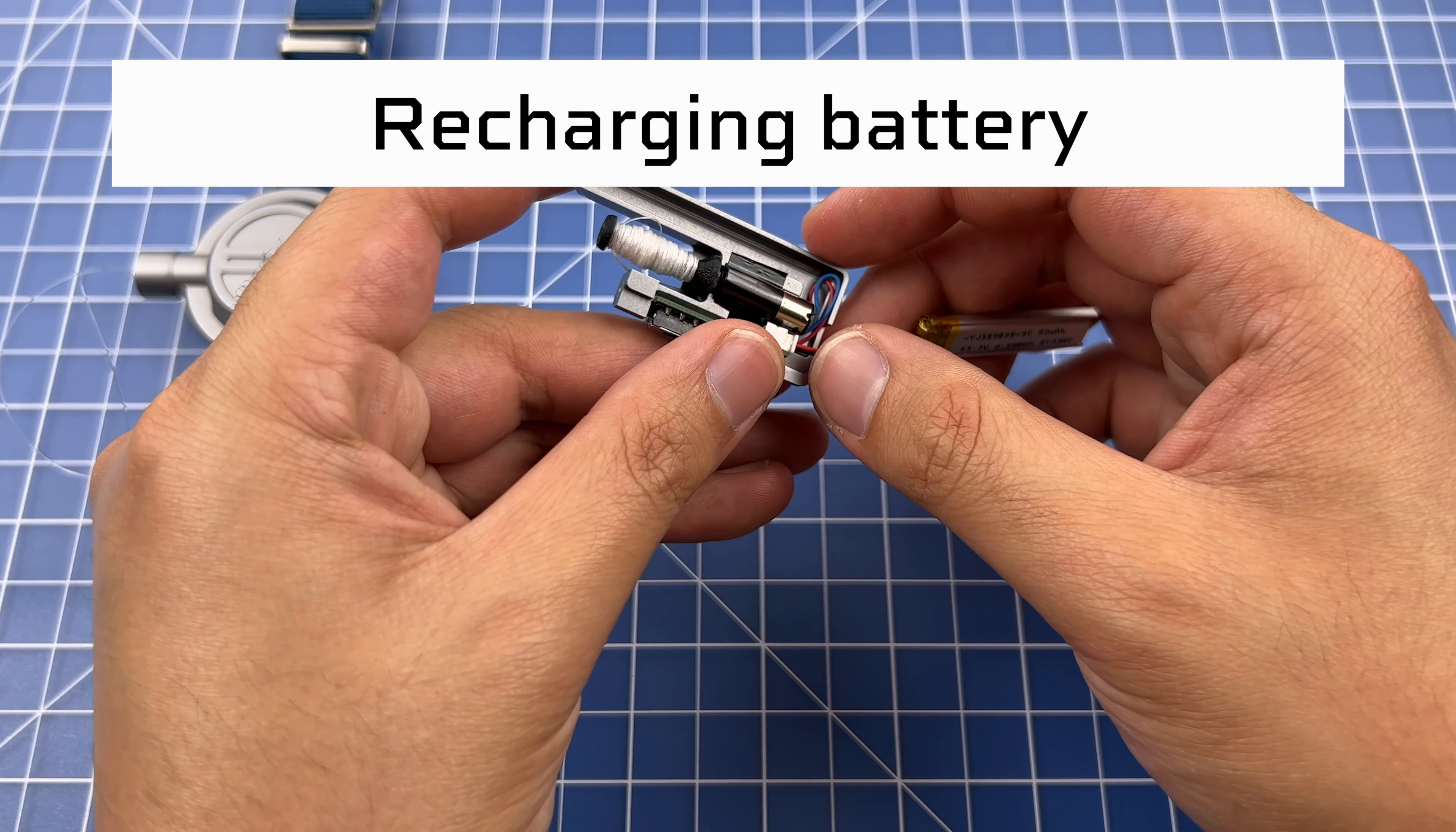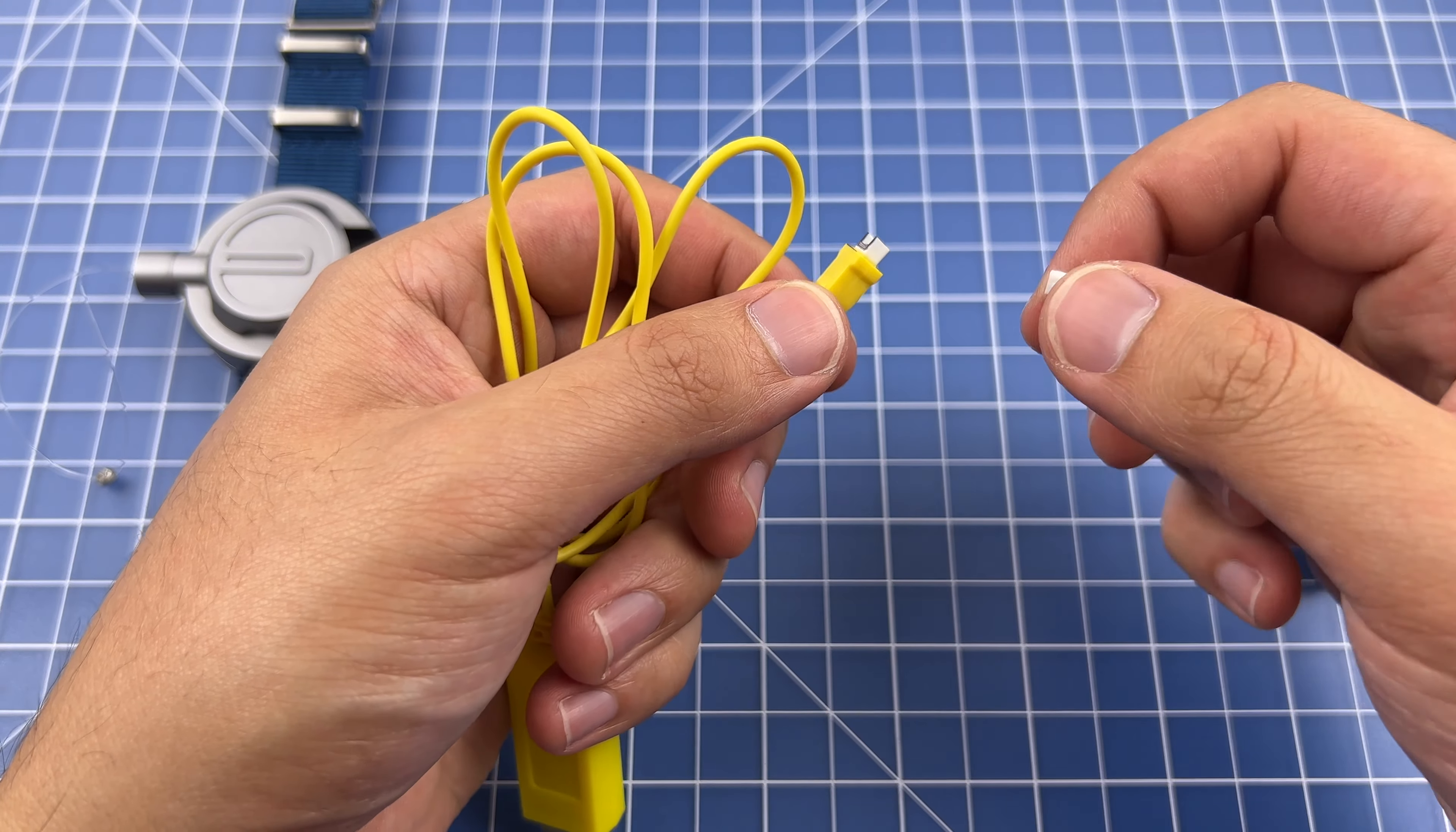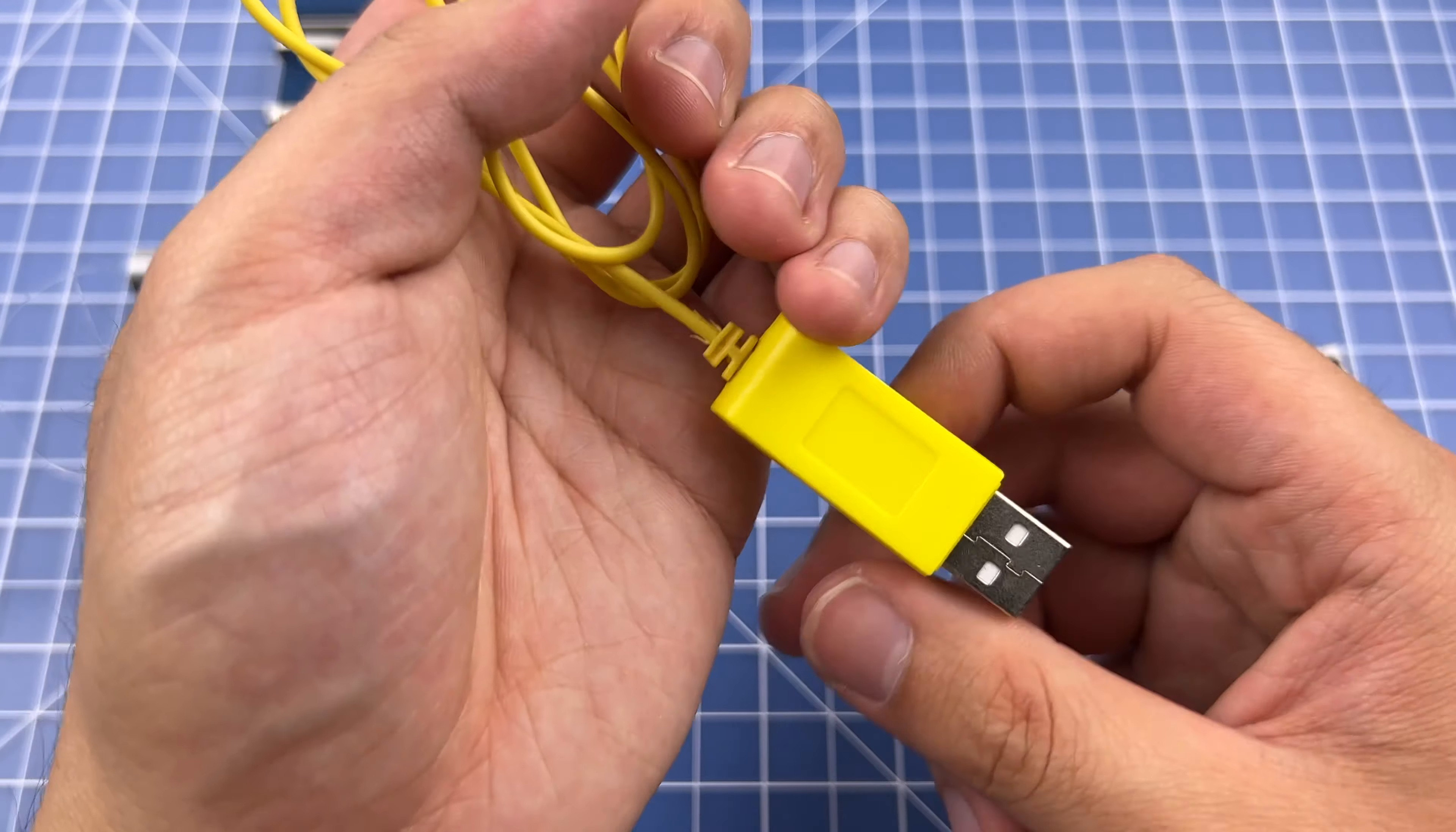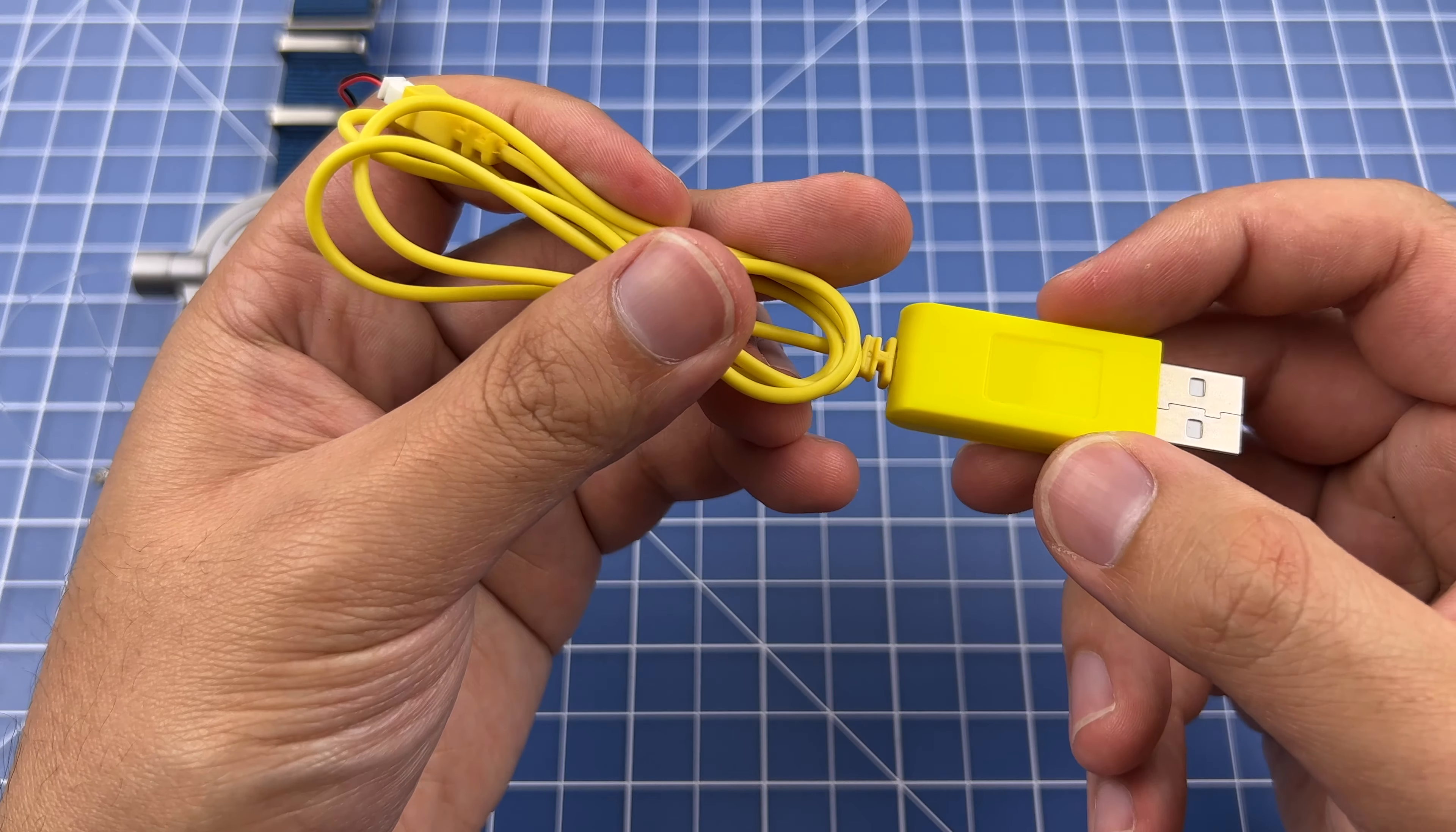To recharge the battery, unscrew the thread cartridge and carefully pull out the battery. From here, you can take the included battery charger and line up the two ports black on black. Once that's done, plug this into any USB input and you'll see a red light turn on. This red light means that the battery is charging.